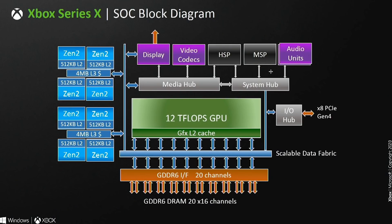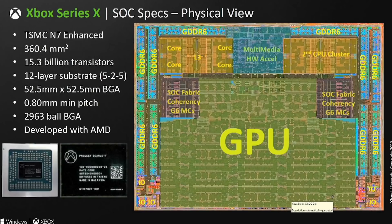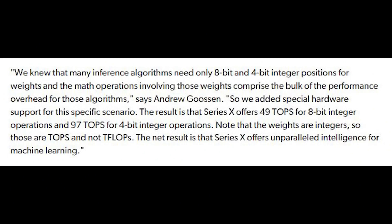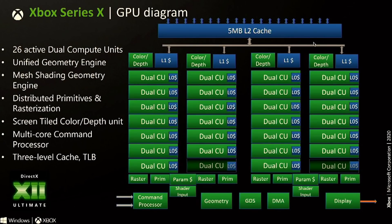Microsoft have detailed what the Series X and S are capable of pretty extensively — way more so than Sony have for the PlayStation 5, which honestly is quite a mystery in several areas. Microsoft started out with a Eurogamer interview where they mentioned that one of the things they wanted for the Series S and X was 4 and 8-bit operations, which are mostly used for inference, not training. Then we had the Hot Chips Conference, where Microsoft stated that there was a small amount of die space required for the 4 and 8-bit operations on their GPU.